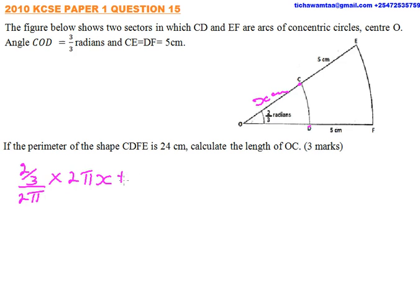Then we add these two lengths that is 5 cm and 5 cm, so plus 5 plus 5. Then we add the arc length of the outer circle, that is FE.